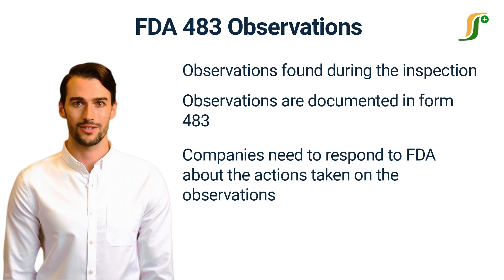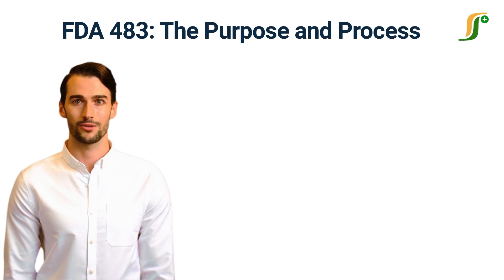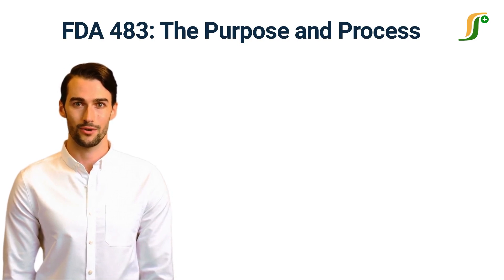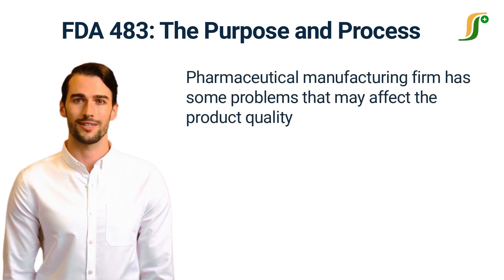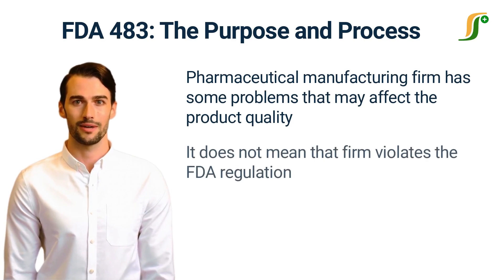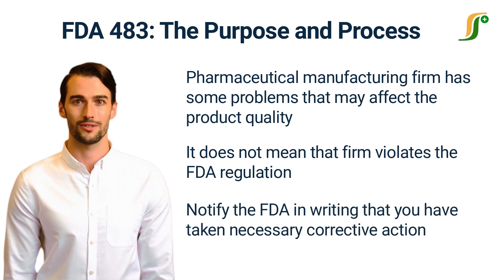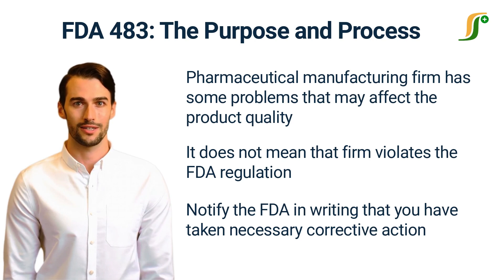It is not a difficult task to respond to FDA if you have a plan. Let us know the purpose and process of FDA 483. Form 483 is issued when FDA finds that any pharmaceutical manufacturing facility has some problems that may affect the product quality. Form 483 does not mean that the firm violates FDA regulation, but it indicates problems that need attention and may cause serious problems in the future if not addressed. Once you have taken action on the observations and notified the FDA in writing that you have taken necessary corrective action, they will not take any further regulatory action.